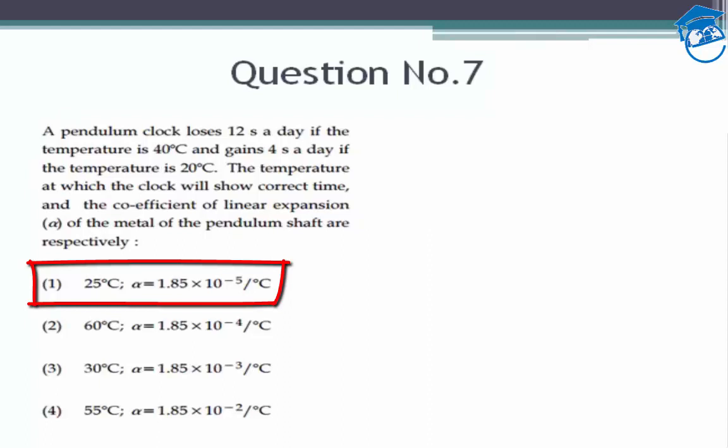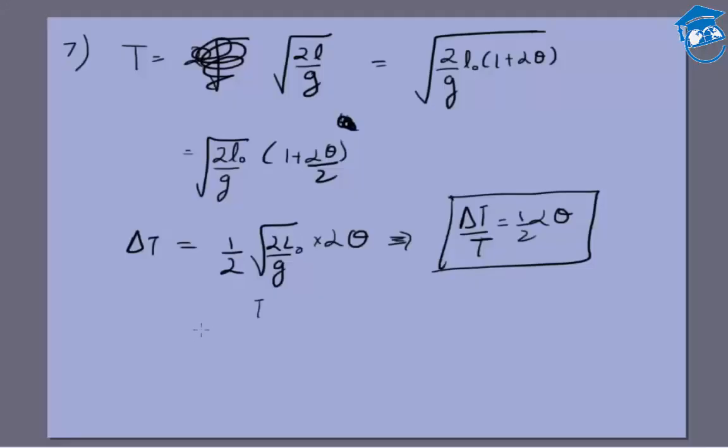Which means the time taken for each revolution, for each repetition of the pendulum cycle, would increase. So when a pendulum clock loses time, the time period increases, so ΔT is positive. What we'll get is 12 divided by T, where T is the total time in one day.